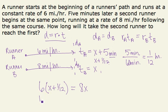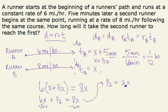Distributing, I get 6x plus 6 twelfths, or 1 half, equals 8x. Subtracting 6x over, I am left with 1 half equals 2x. Well, now I'm going to divide by 2, which you can also think of as multiplying by 1 half. And 1 half times 1 half is 1 fourth. So my x equals 1 fourth.